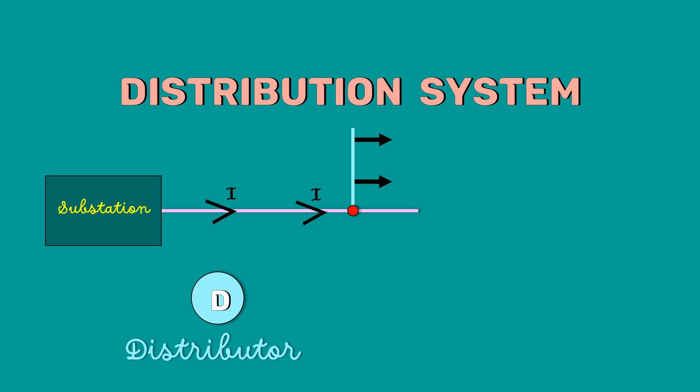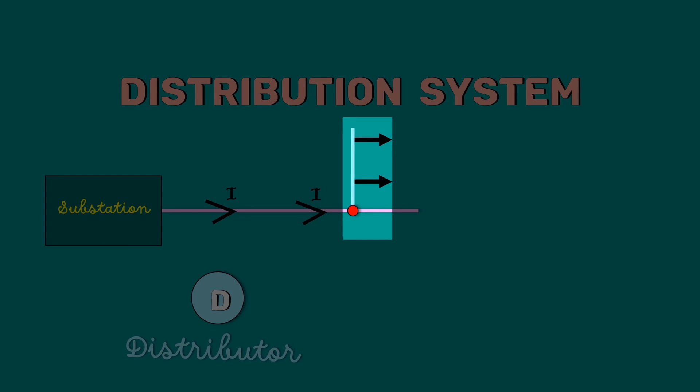We are going to draw the vector diagram of this AC distributor. Consider an AC distributor AB with concentrated loads of I1 and I2 tapped off at points C and B.